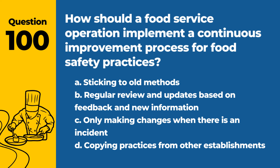Question 100. How should a food service operation implement a continuous improvement process for food safety practices? a. Sticking to old methods. b. Regular review and updates based on feedback and new information. c. Only making changes when there is an incident. d. Copying practices from other establishments. Answer: b. Regular review and updates based on feedback and new information. Continuous improvement is key to maintaining high food safety standards.